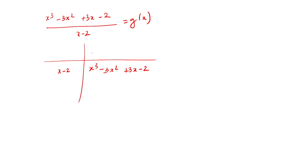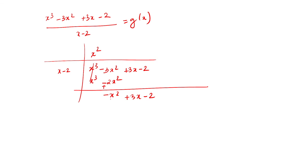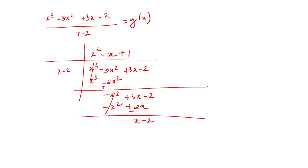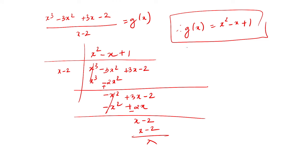Dividing x cubed minus 3x squared plus 3x minus 2 by x minus 2: multiply x by x squared to get x cubed, minus 2 by x squared gives minus 2x squared. After cancellation, we get minus x squared plus 3x minus 2. Multiply x by minus x to get minus x squared, and minus 2 by minus x gives plus 2x. After final cancellation, we multiply x minus 2 by 1. Therefore g of x equals x squared minus x plus 1.